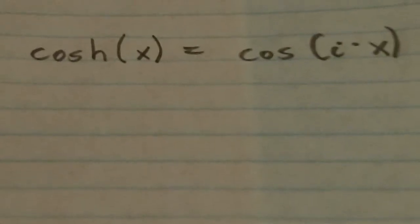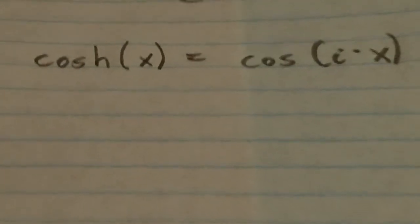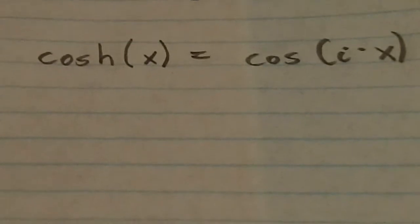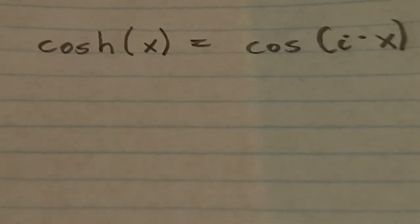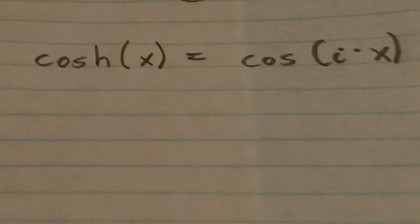But for now, please realize that cosh of x is equal to, or it can be expressed as being equal to, cosine of i times x. This is something I find truly amazing. i is the imaginary unit, which you've learned about before, equal to the square root of negative 1. And please feel free to see my other video on complex numbers. They're really my favorite set of numbers, the complex numbers.